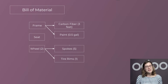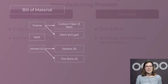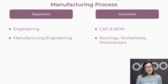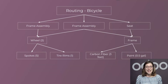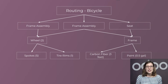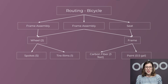Once the BOM is done, the responsibility will shift to the manufacturing engineering team. They're responsible for routings, worksheets, and work centers. A routing is a set of steps a product goes through for production. Worksheets are the instructions for the manufacturing operator. And work centers are the places where the production is being conducted. They put the engineers' plans in motion.